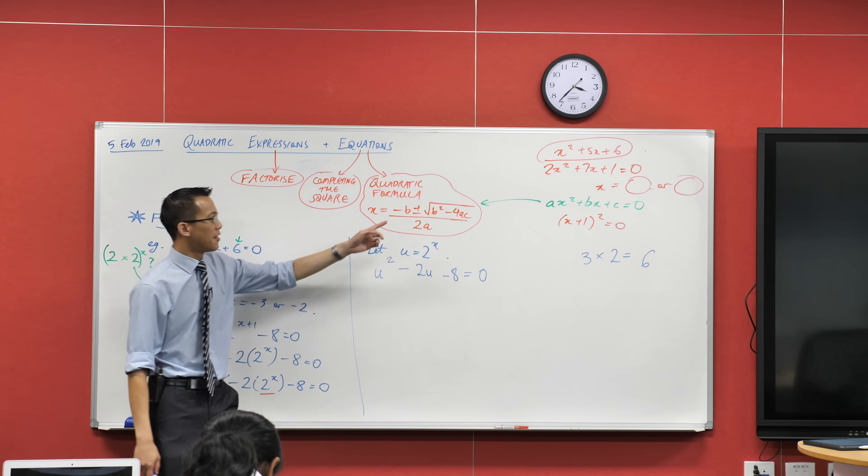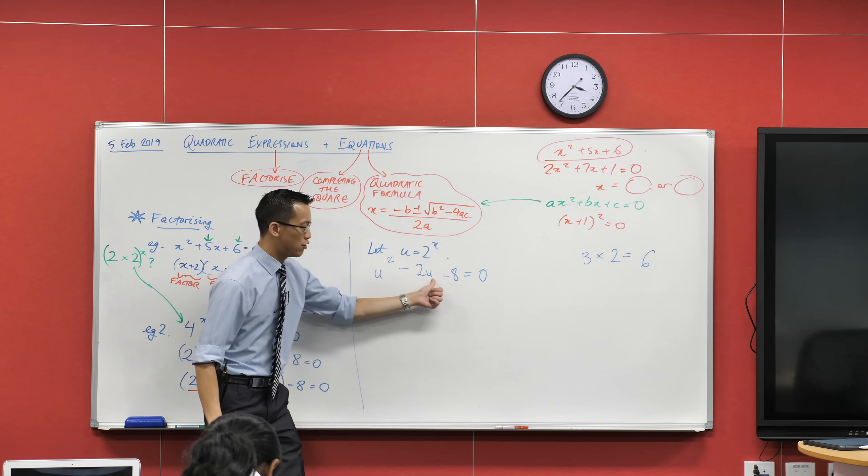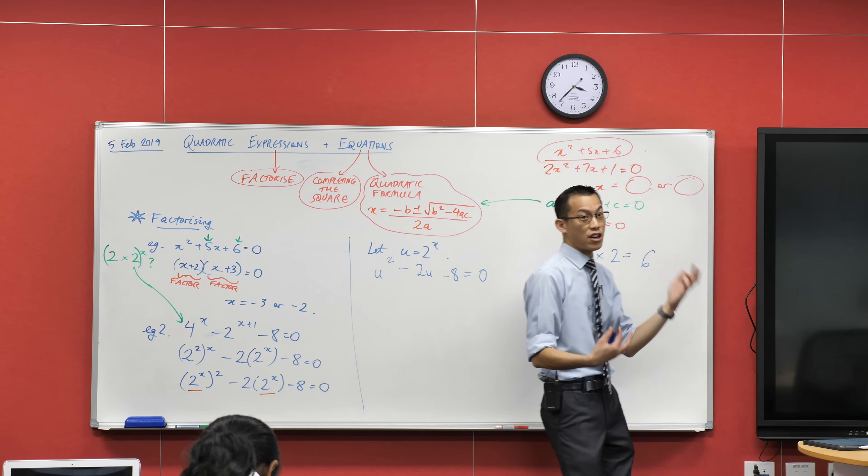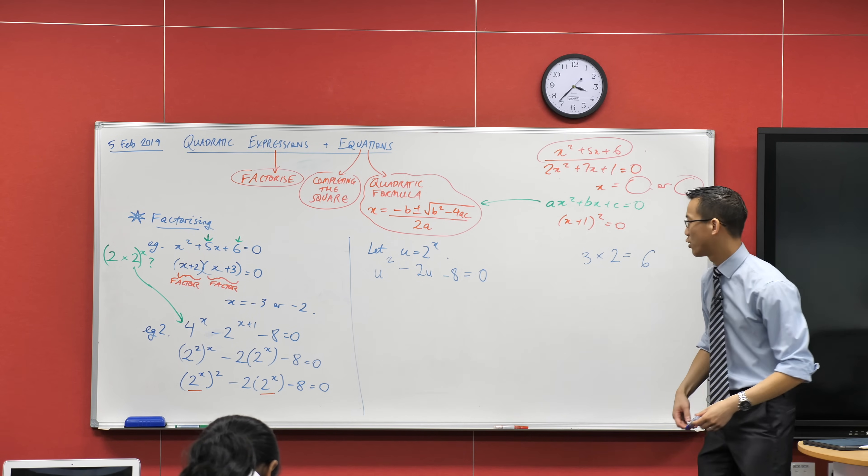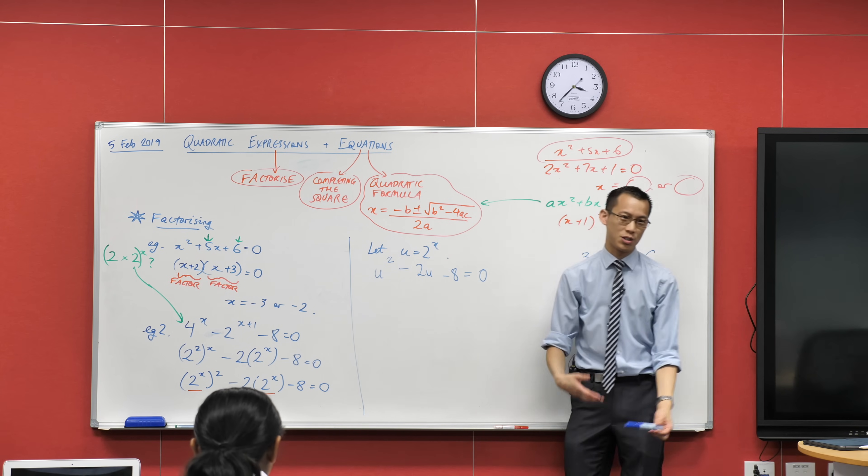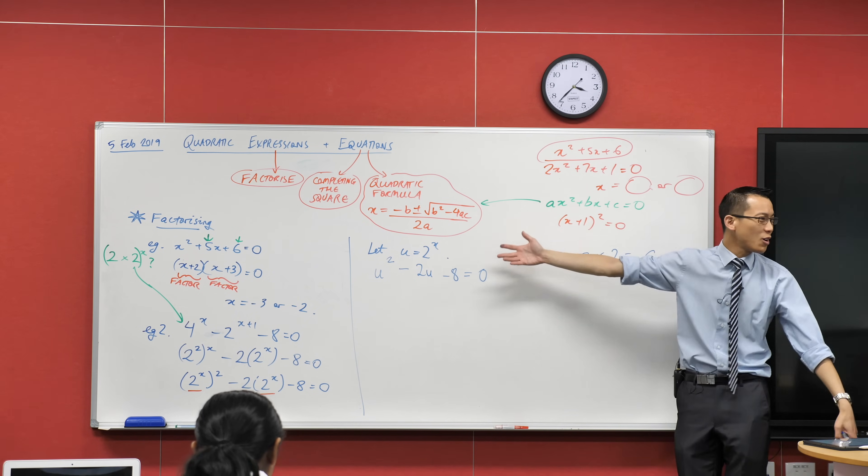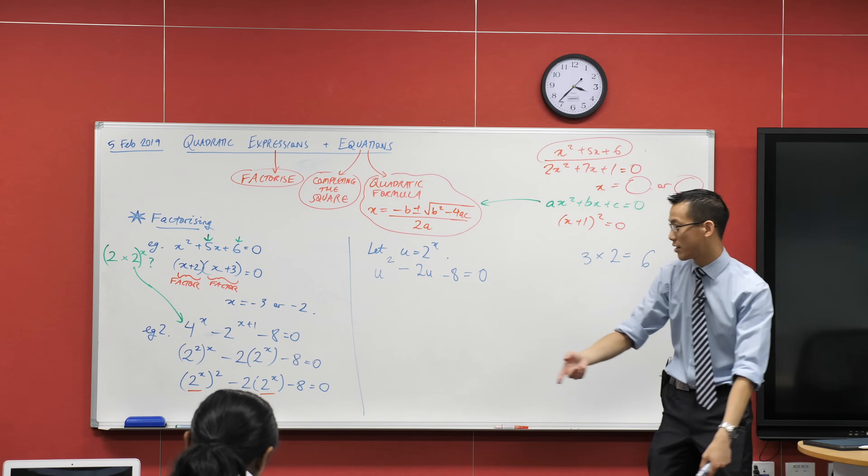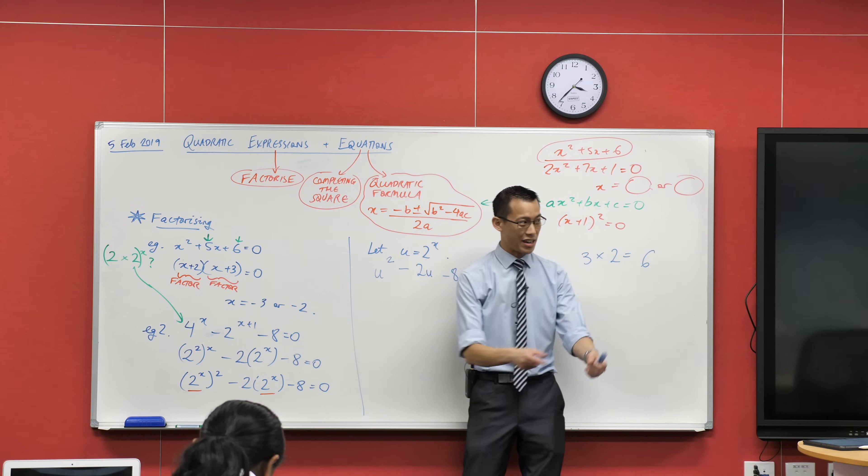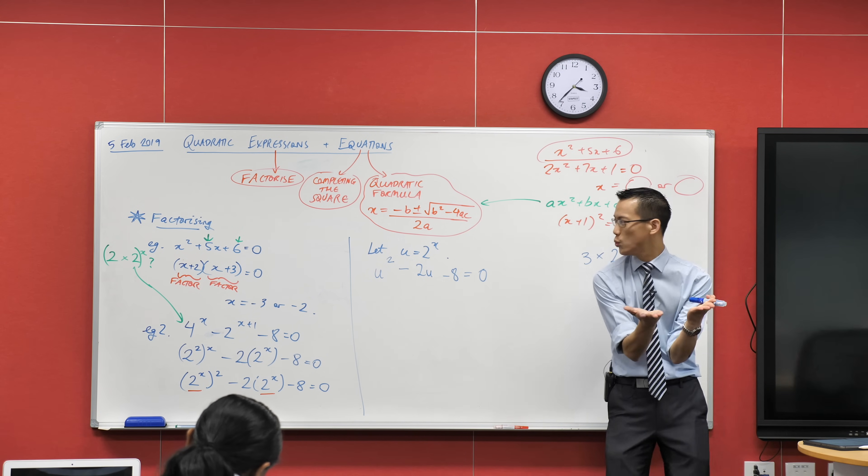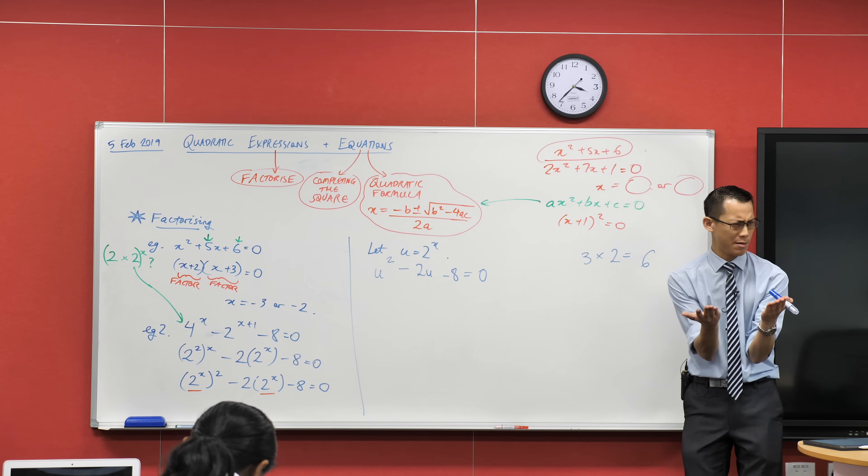And we've just transformed this problem which looked super awkward and weird into a problem we're really familiar with, right. That x, that u, t, I could call it anything I like, right. I could have made it Zaki² - 2×Zaki - 8, it just would have taken longer to write, and Zaki wouldn't be happy about it. Nonetheless I can still solve this, right. Can we factorize? We're going to do it just like we did here. We're going to have to think of two numbers and they add up to what, do I add up to?